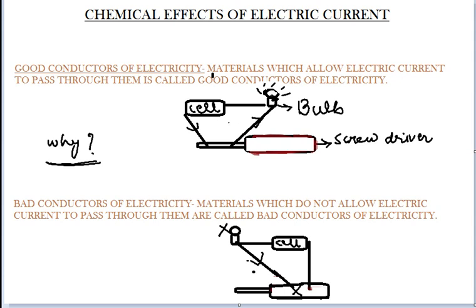So in this case we can clearly see that metal is a good conductor of electricity, which is why it allows electric current to pass through it. But wood is not a good conductor of electricity and does not allow electric current to pass through it.